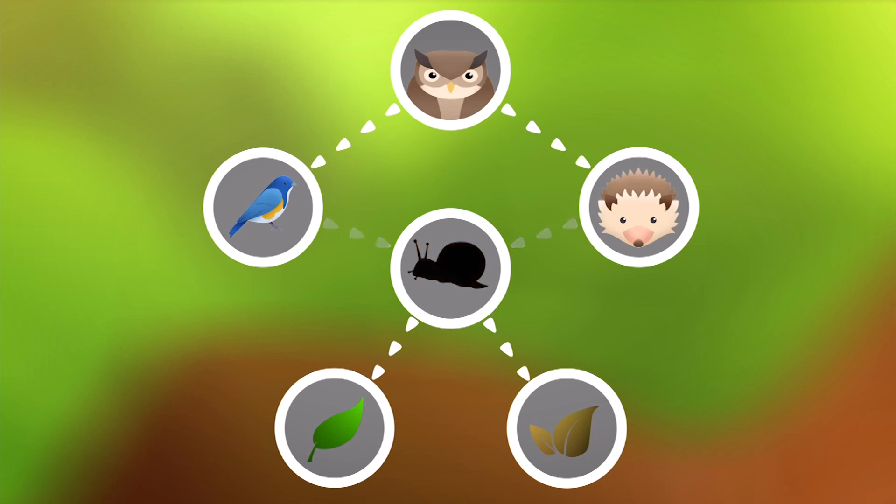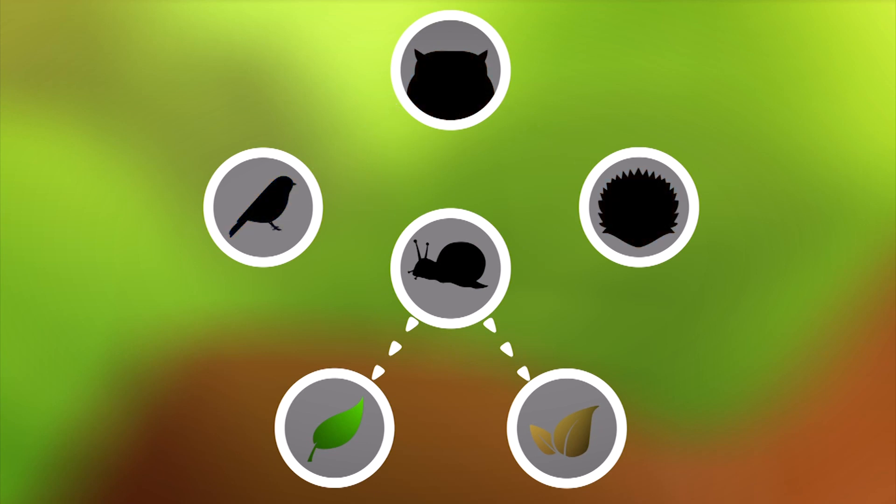So without animals like snails there wouldn't be enough food for animals like hedgehogs or even owls. They are all part of a large food web.